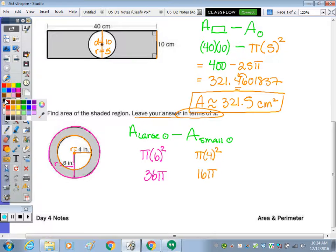So to finish, 36 pi minus 16 pi. Treat the pi's as if they were x's. So you combine or subtract the coefficients out front. 36 minus 16 would be 20. And the pi stays. Our unit is square inches.